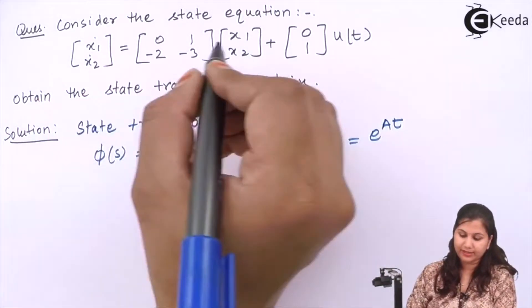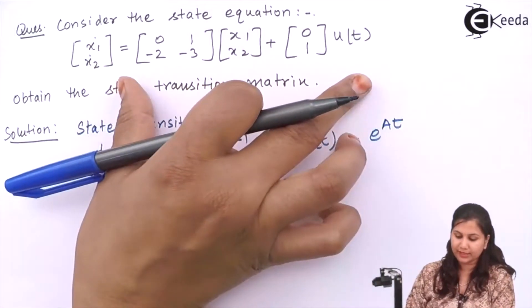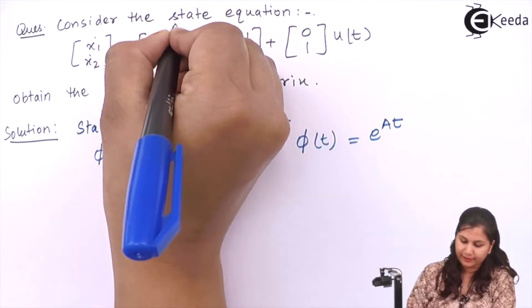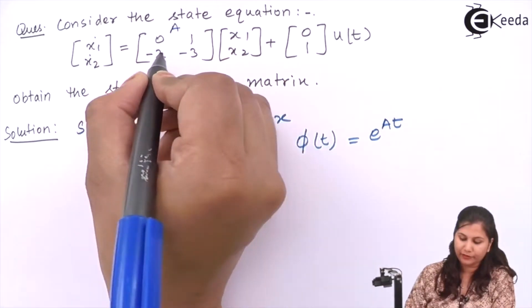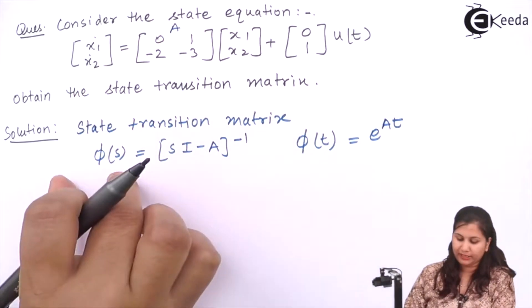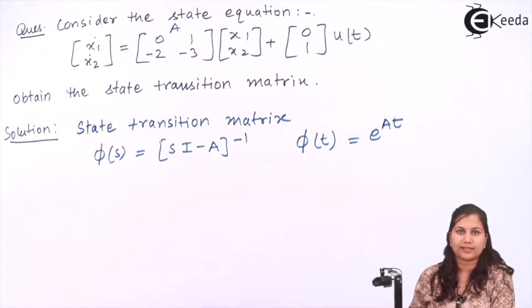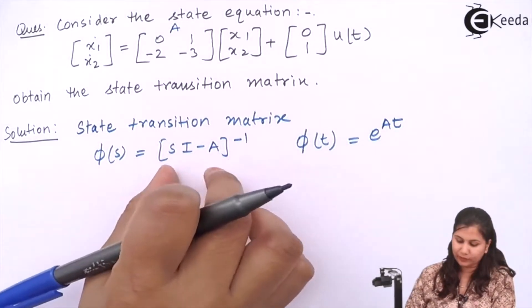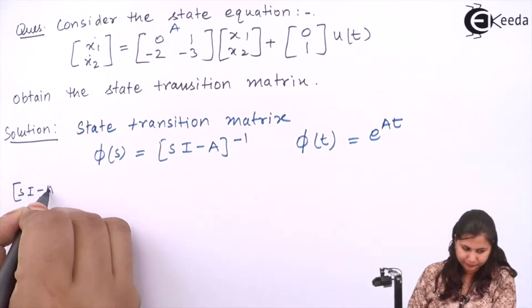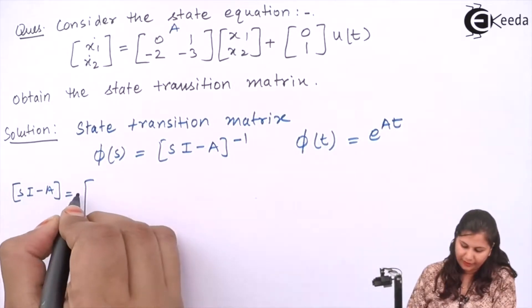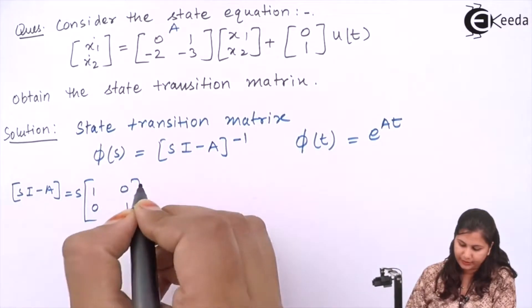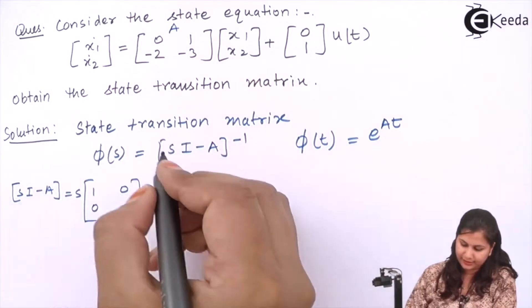From the given state equation we know that the value of matrix A is given by [0, 1; -2, -3]. This is A. Putting the value of A in this formula we can easily calculate the state transition matrix. Let us first calculate sI minus A.